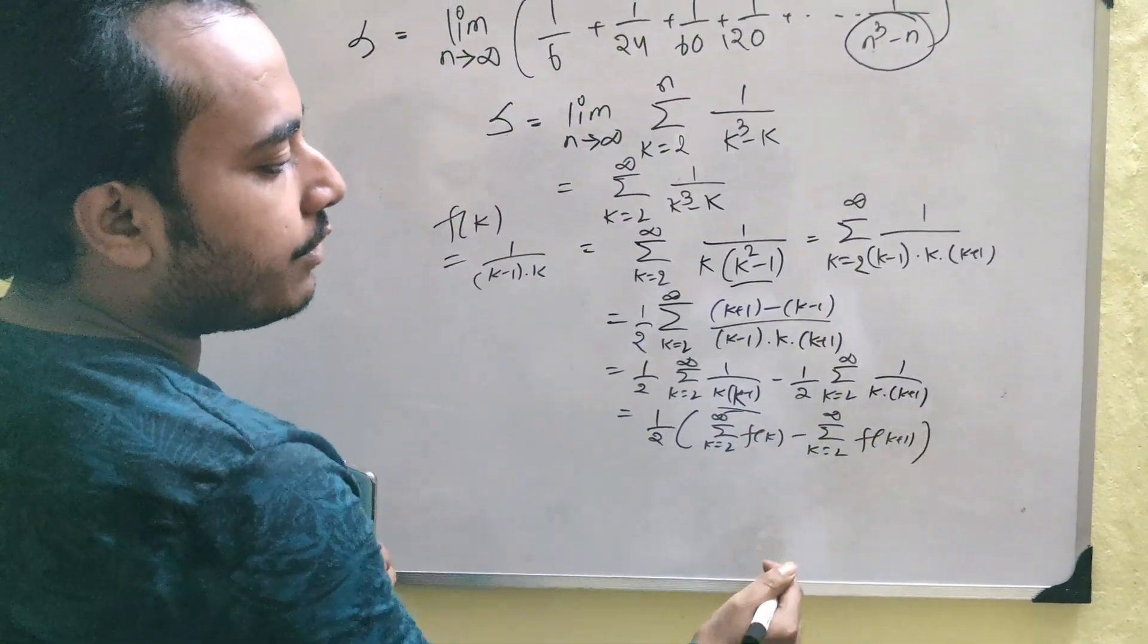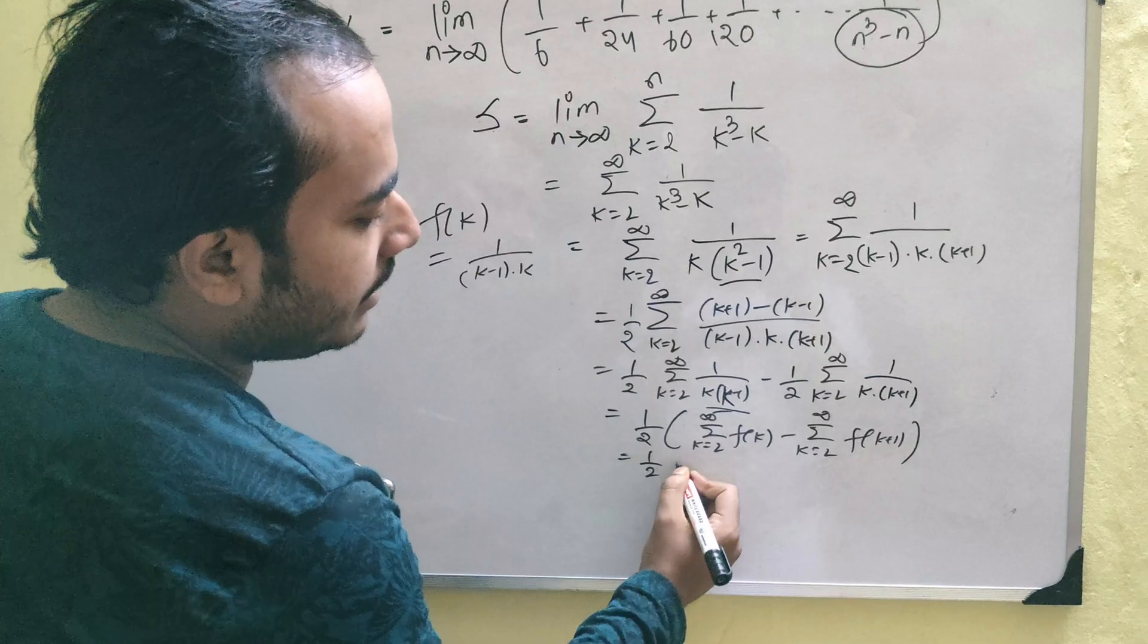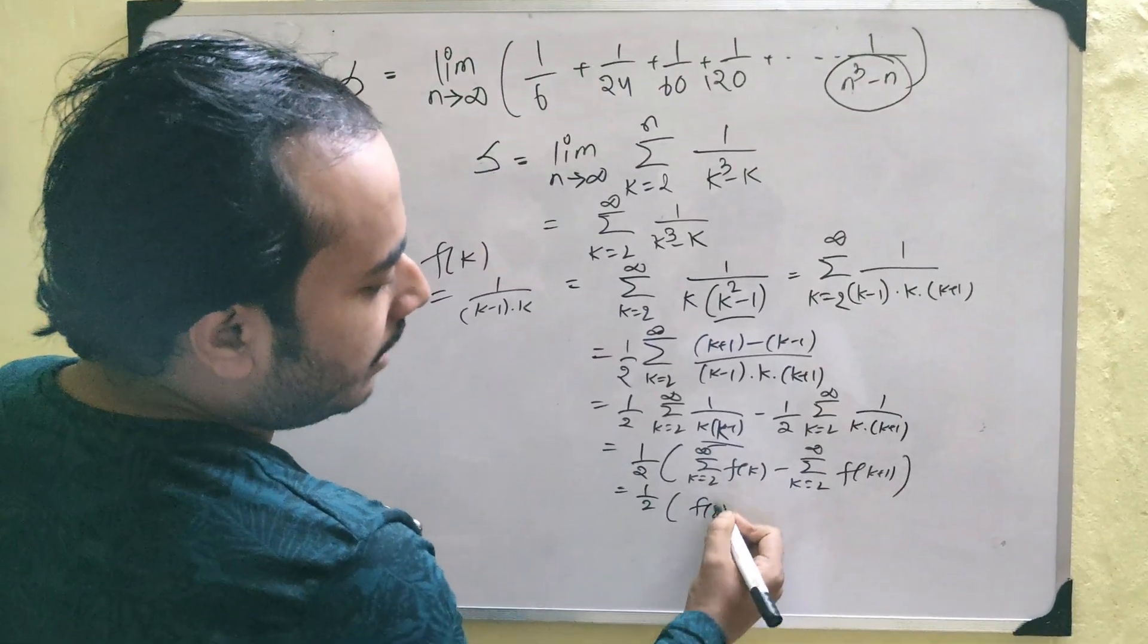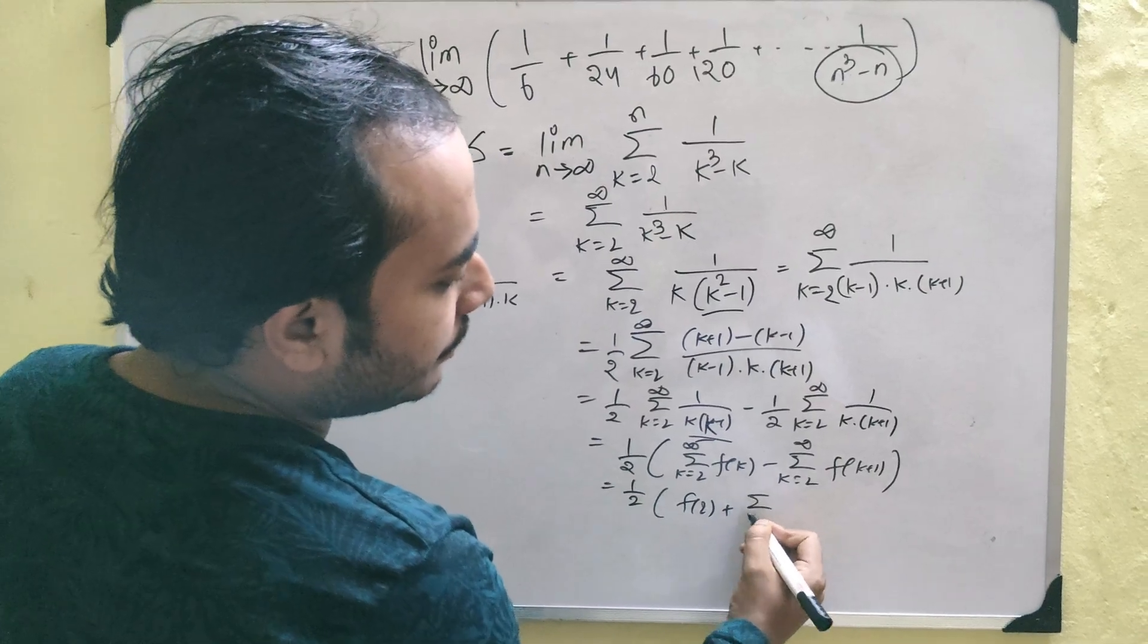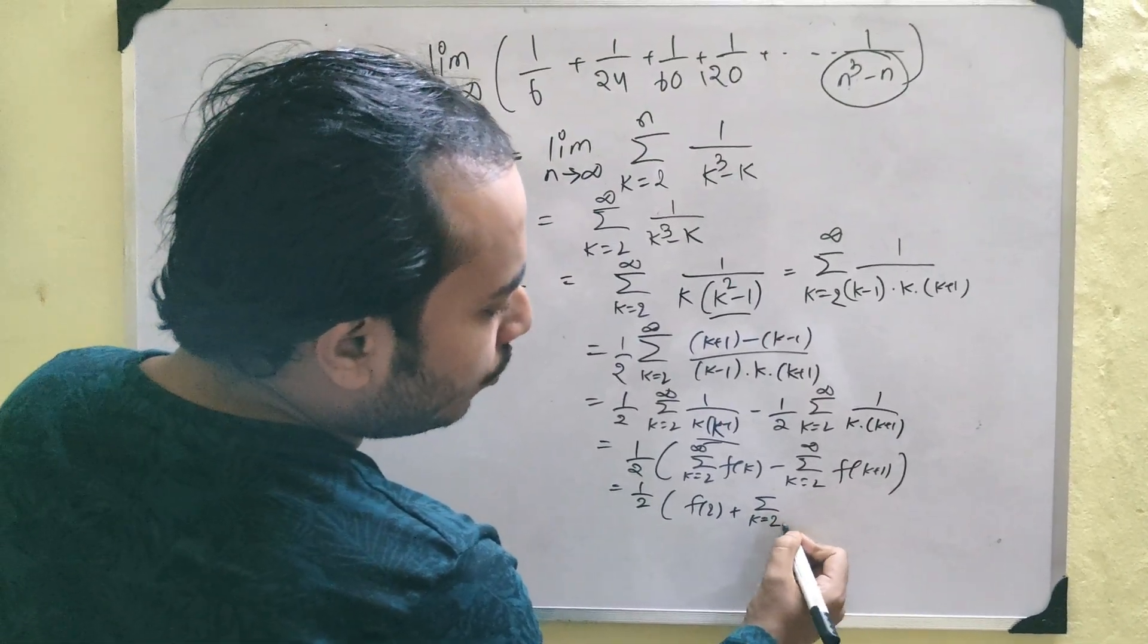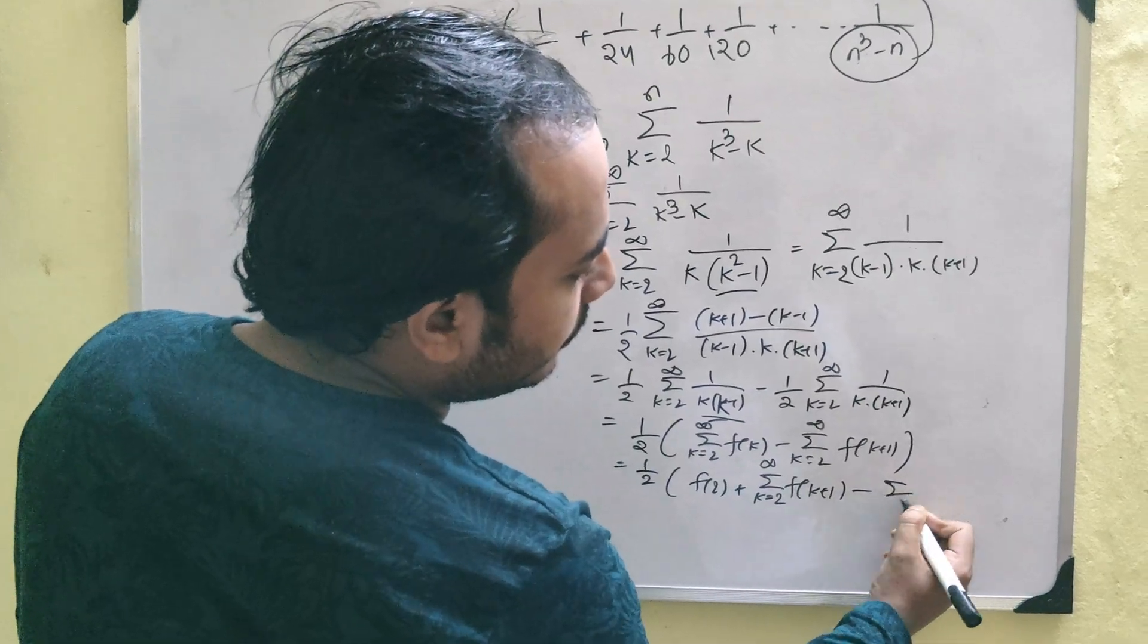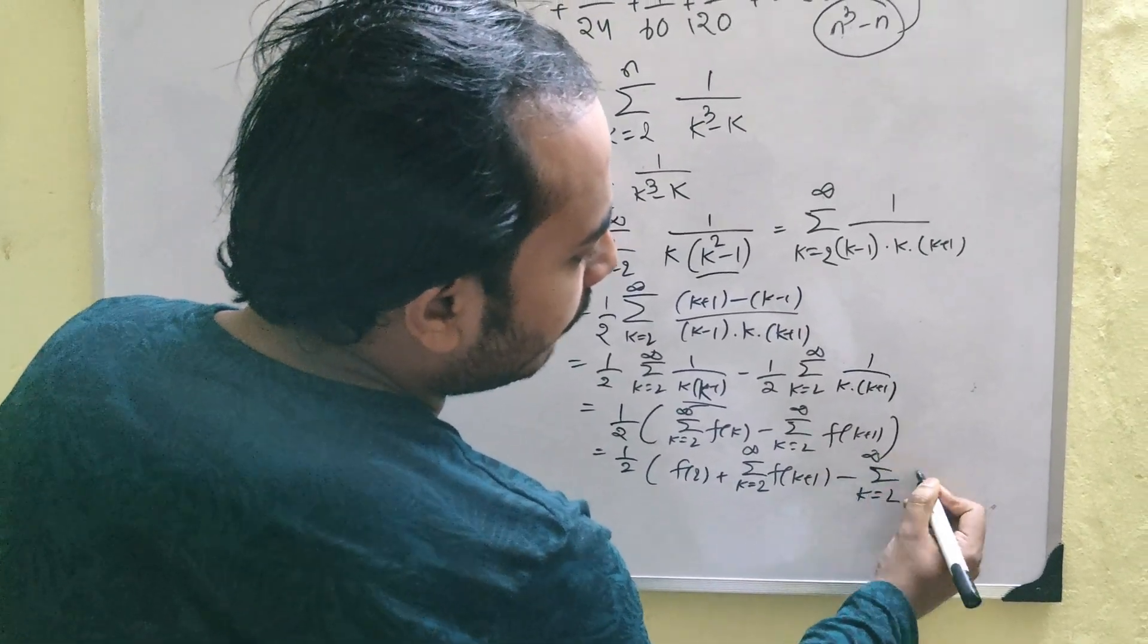Now, obviously, if you were to do this, you will simply get, you can take this first term here which is f of 2 and write this summation as plus summation k equals to 2 to infinity f of k plus 1 minus summation k equals to 2 to infinity f of k plus 1.